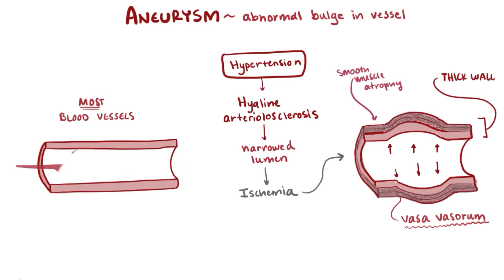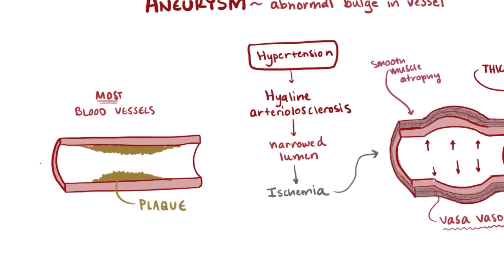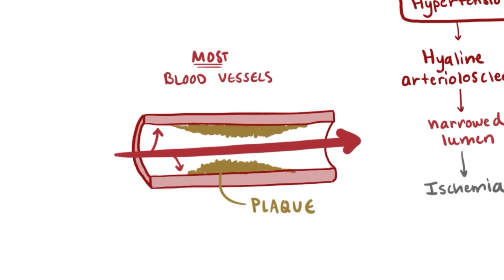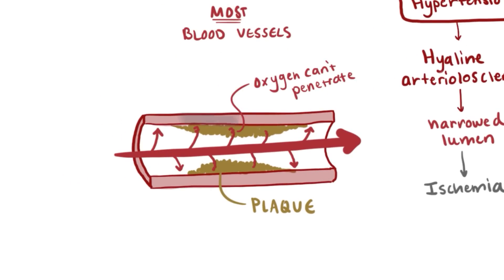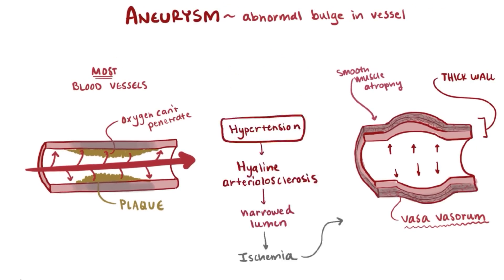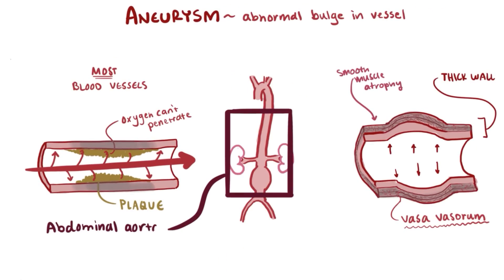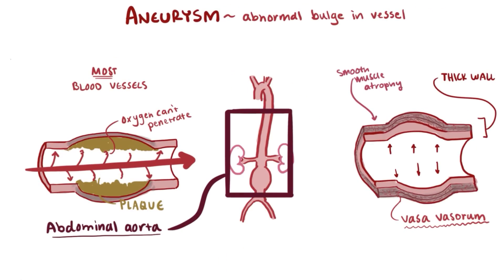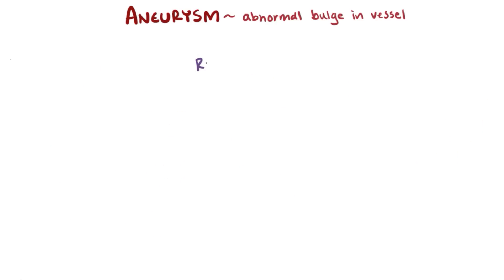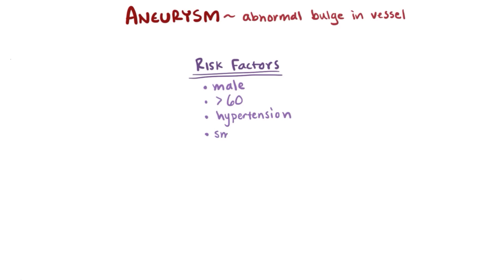The same thing can happen in blood vessels without vasa vasorum if there is plaque building up on the tunica intima thanks to atherosclerosis — oxygen just can't penetrate all the vessels of the wall. You can see this type of aneurysm often in the abdominal aorta, where blood pressure is high and the aorta walls are nourished by passing blood. It's no wonder then why both aneurysms and atherosclerosis share similar risk factors: they're usually seen in people who are male, over the age of 60, and who have hypertension and smoke.